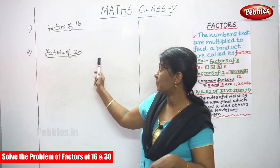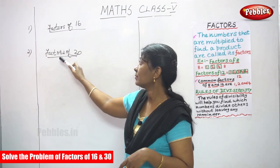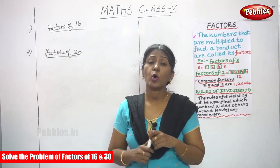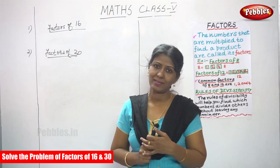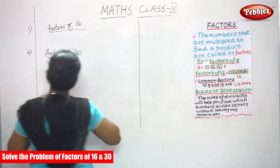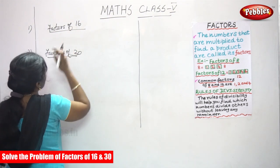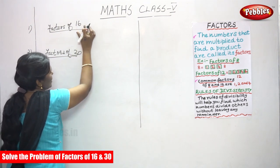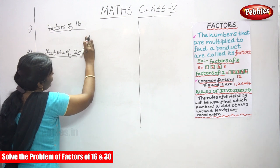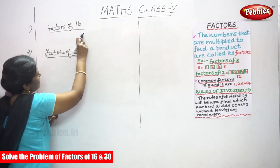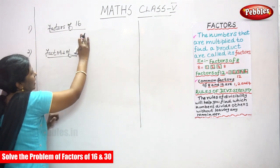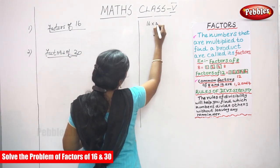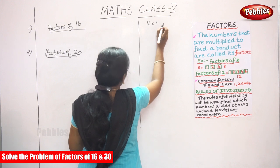Now let's find the factors of 16 and factors of 30, and finally we will find the common factors of 16 and 30. To find the factors of 16, we have to write the multiplication table. With the help of the multiplication table only, we will find the factors. 1 into 16 you can get 16.